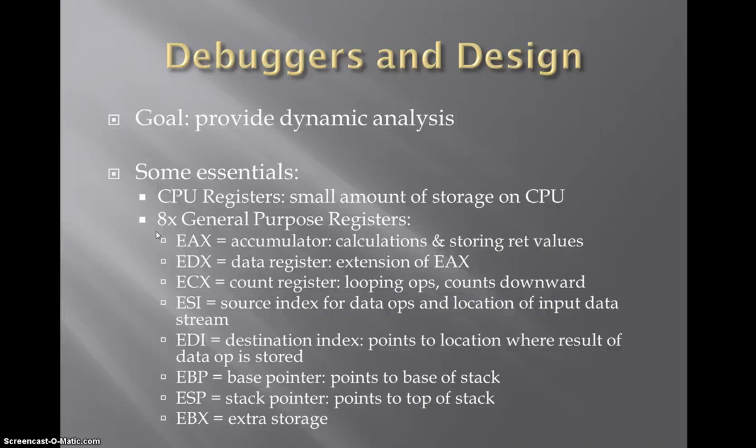ECX is the count register, which helps with looping operations. It's important to understand that ECX counts downward. ESI is the source index for data operations, pointing to the location of the input data stream. EDI is the destination index, pointing to the location where the results of that data operation are stored. EBP is the base pointer, which simply points to the base of the stack. ESP points to the top of the stack, and EBX is extra storage.